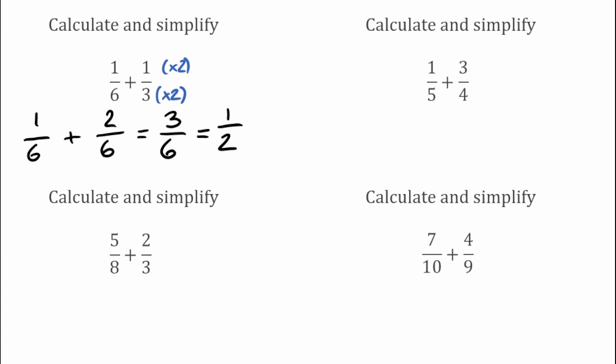For our next question, again calculate and simplify: 1 over 5 add 3 over 4. We look for the lowest common multiple of 5 and 4, which would be 20, so we're going to have two fractions that are over 20 this time.